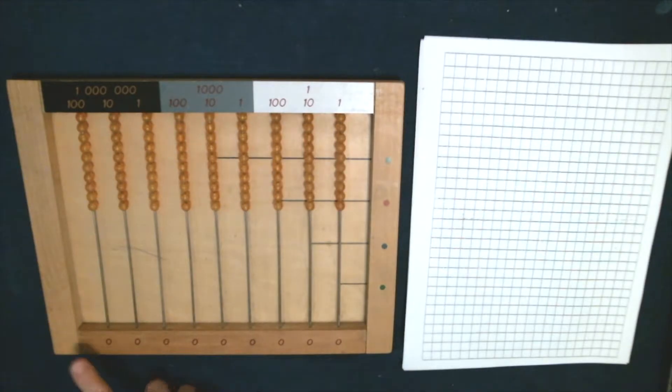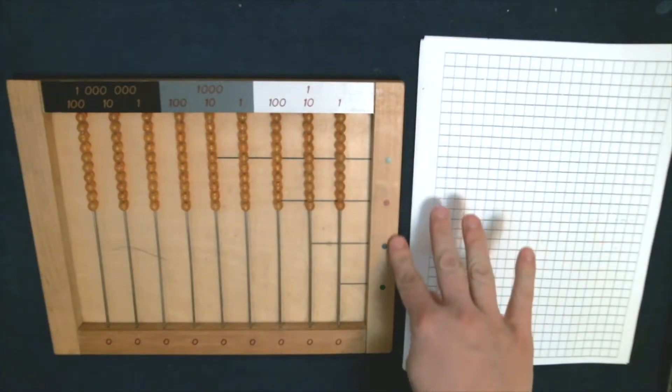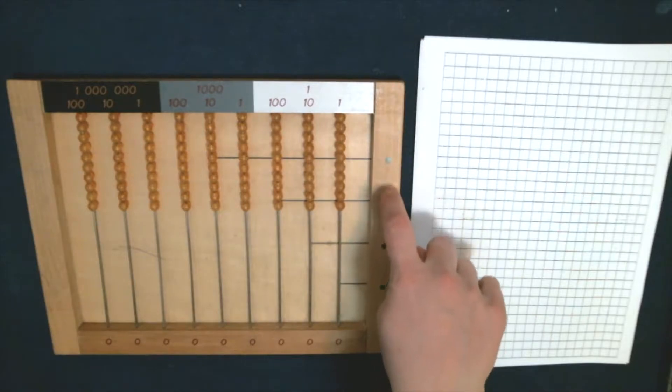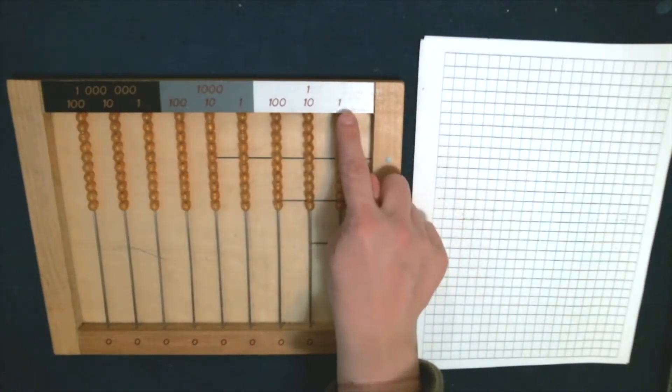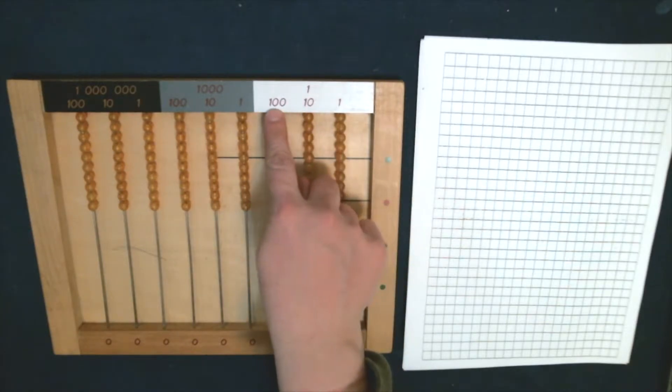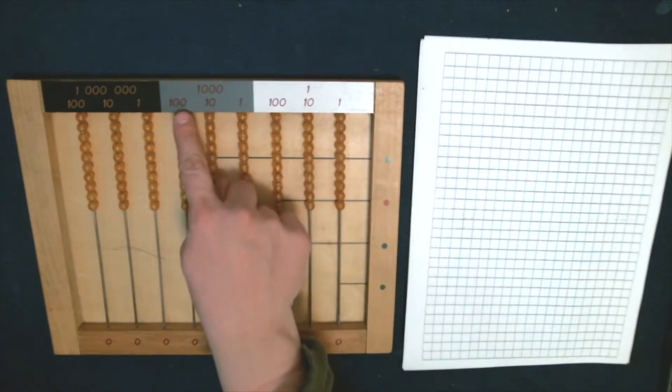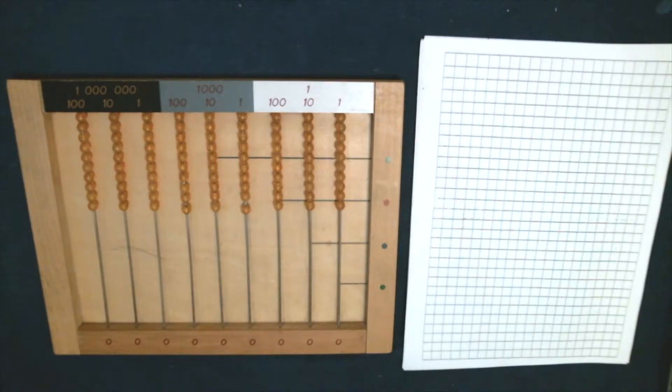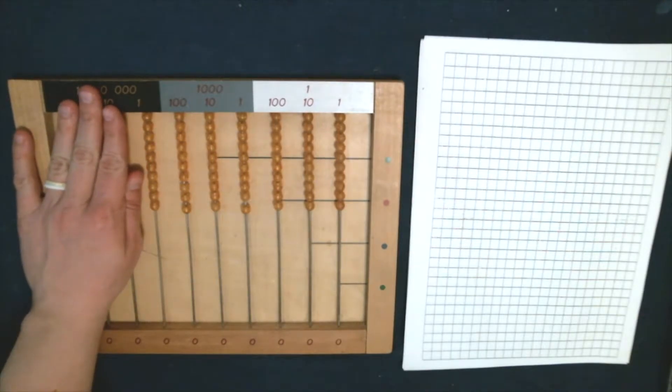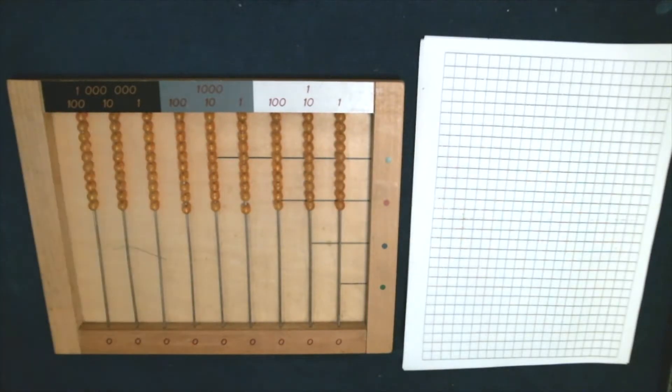Let's take a look at this bead frame. Down here we have our list with red zeros. Here we have units, tens, hundreds, and thousands. And then up here we can see our three families: simple, thousands, and millions. We have units of simple, tens of simple, hundreds of simple, units of thousand, tens of thousand, hundreds of thousand, units of million, tens of million, hundreds of million. Our large bead frame stops at units of million, so we can actually do numbers that are a little bit bigger on this frame.